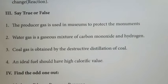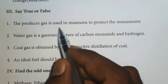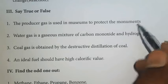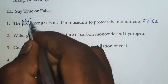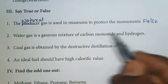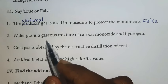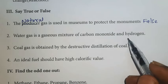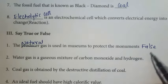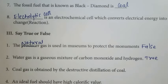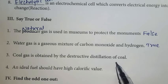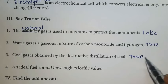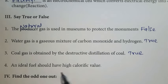Next, true or false. First one: the producer gas is used in museums to protect the monuments — False. Second one: water gas is a mixture of carbon monoxide and hydrogen — True. Third one: coal gas is obtained by the destructive distillation of coal — True. Fourth one: an ideal fuel should have high calorific value — True.